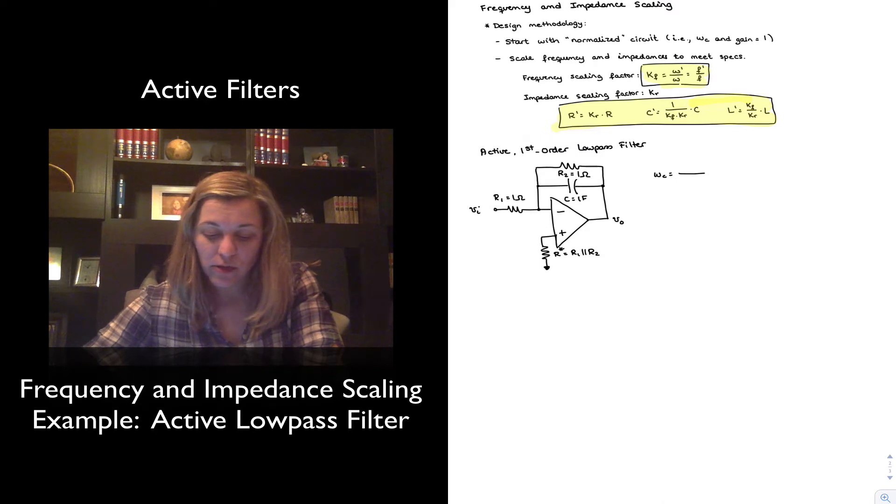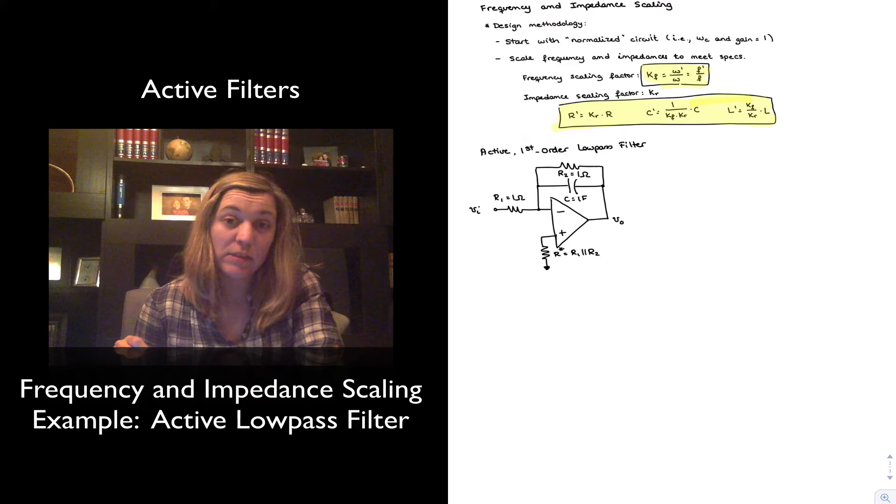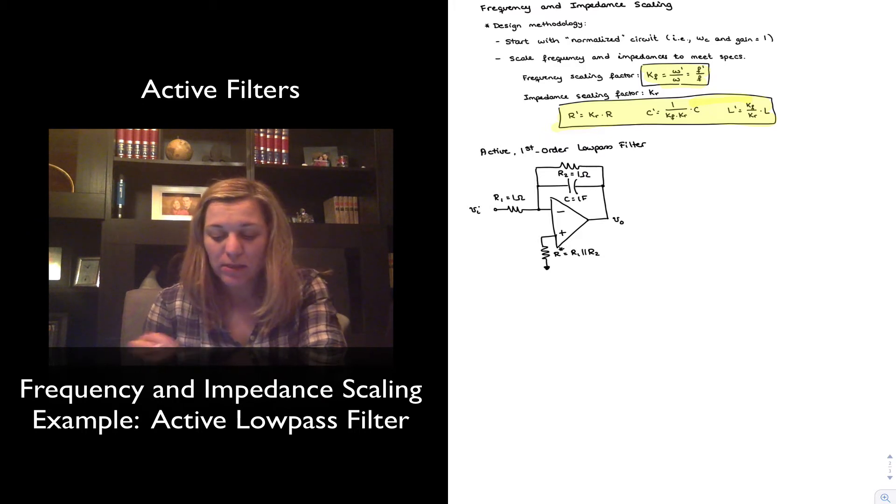So I have an active first-order low-pass filter, and it consists of what is essentially a practical integrator, but basically a resistor R1 of value 1 ohm, and then in the feedback path a resistor in parallel with a capacitor. Notice all the components have a value of 1, except for this resistor that I've labeled R star.